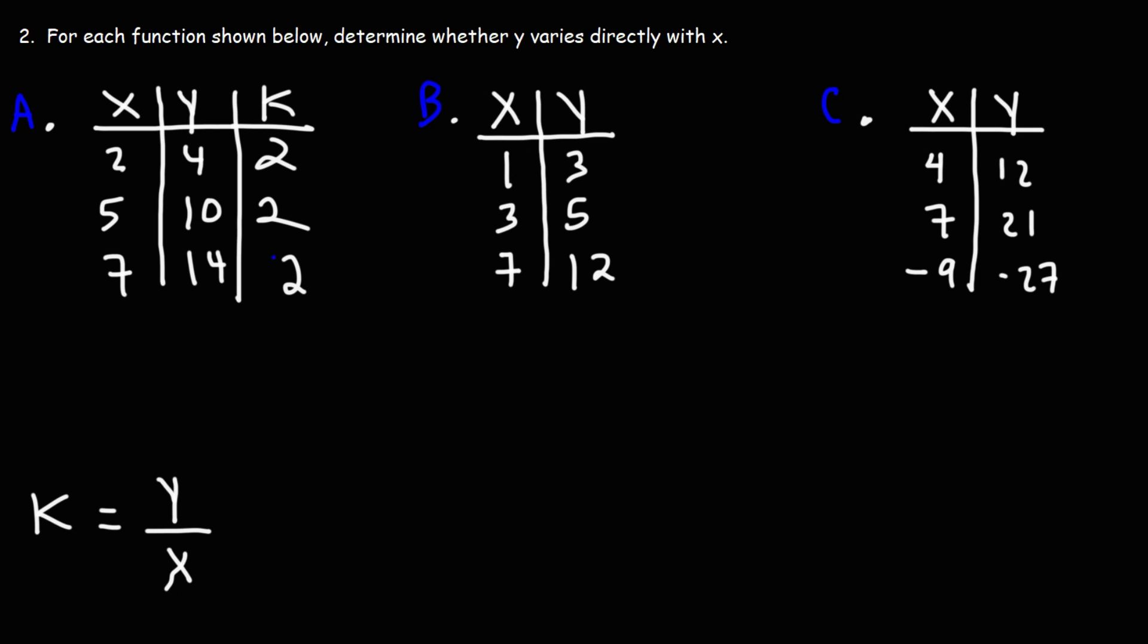So notice that K is constant. It doesn't change. So because it's constant, we can say yes. For the first table, Y varies directly with X because we have a constant of variation.